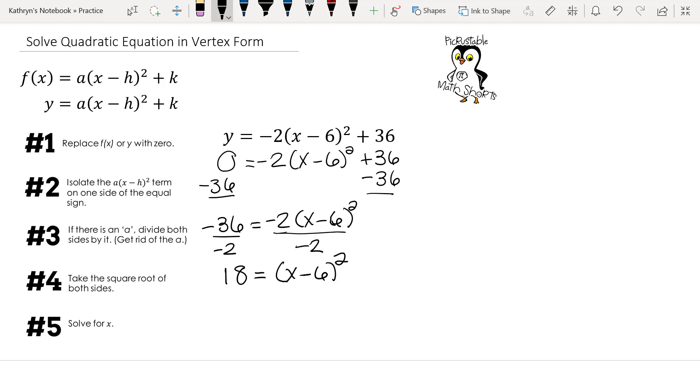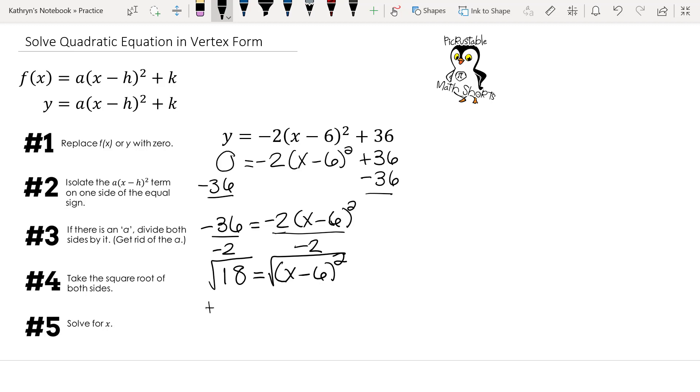Now that we have the square by itself, we're going to take the square root. So now we're going to have plus or minus the square root of 18 equals x minus 6.